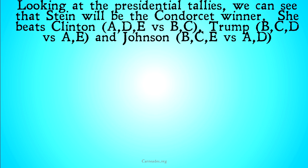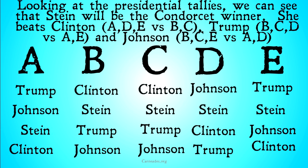Looking at our presidential tallies, we can see that Stein will be the Condorcet winner. She beats Clinton with voters A, D, and E voting for her over Clinton. She beats Trump with B, C, and D voting for her, and beats Johnson with B, C, and E voting for her over him. So since she beats all of the other candidates in head-to-head matchups, Stein is our Condorcet winner, even though Stein had no first-place votes and many other systems haven't picked her. The Condorcet winner seems like a pretty clear winner — if you can win in a head-to-head matchup against every single other candidate, that seems like a good winner. But so many other systems pick someone else.